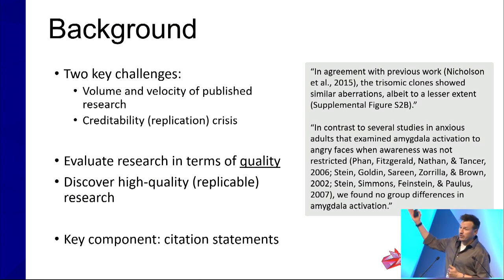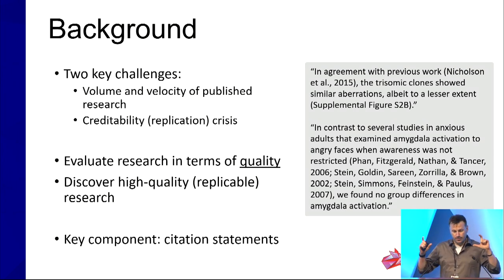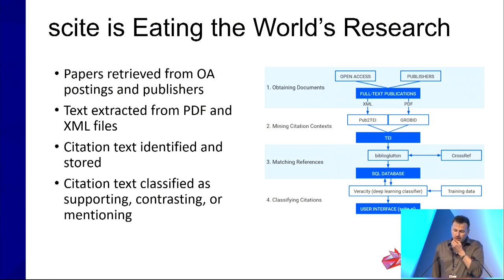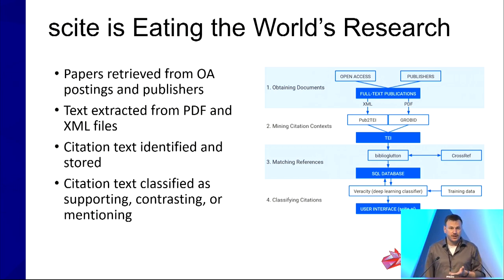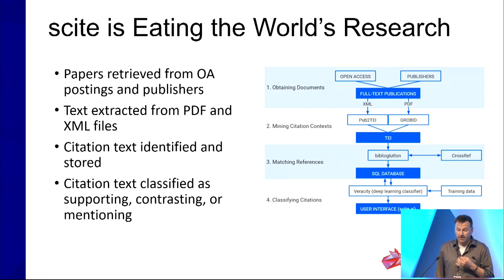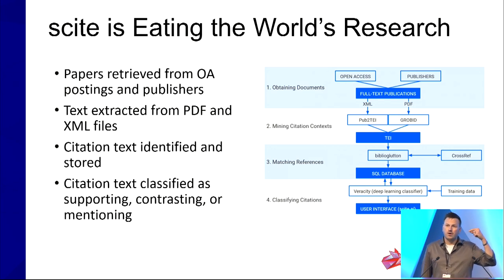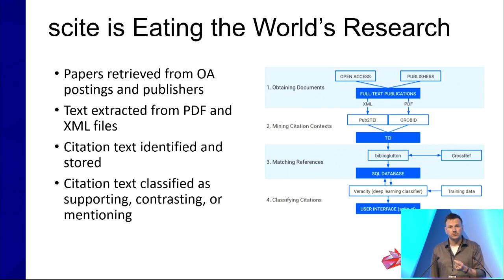A citation statement is basically the text that surrounds the citation to a scientific paper, as shown in the gray box. To analyze the content of scientific citations, you have to have the full text of the scientific article. I'm going to talk about our methodology briefly — if you want the technical details, there's a QR code and a link to an open access paper where we describe it in more detail.